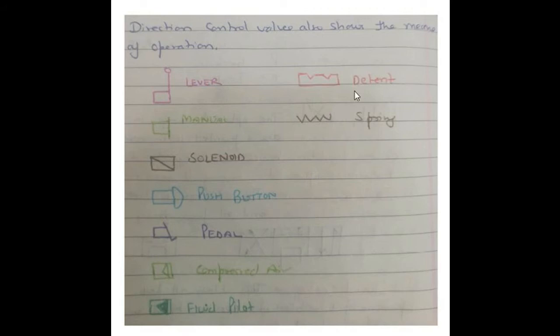Detent is the different positions you can set the DCV. Spring is another mode by which we can operate that DCV.